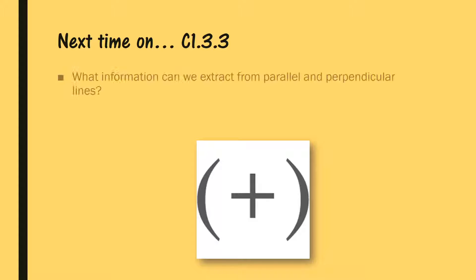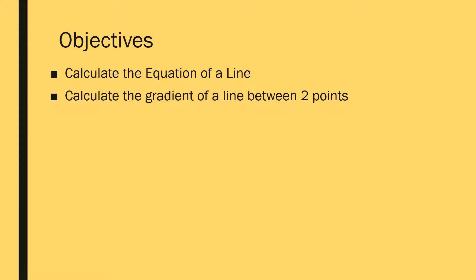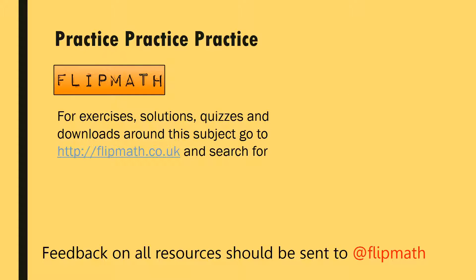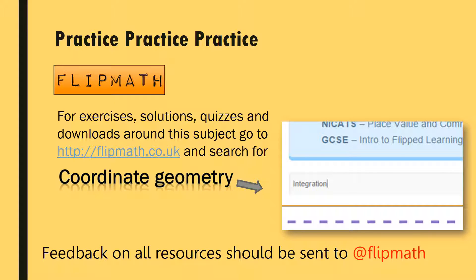Next time we'll look at what information we can extract from parallel and perpendicular lines and what kinds of questions that leads to. The objectives for this lesson were to calculate the equation of a line and calculate the gradient between two points — the two examples should have covered both of those. For exercises, solutions, quizzes, and downloads, go to Flip Math and search for coordinate geometry. Thanks for watching!